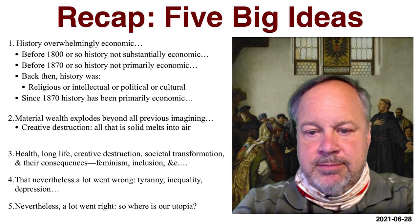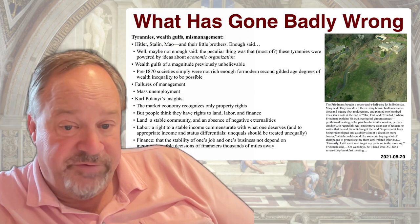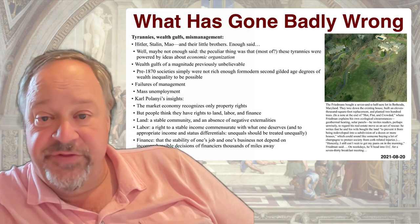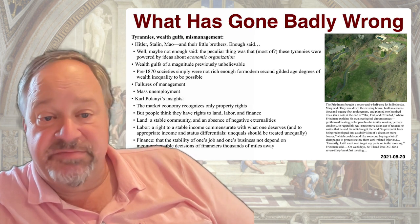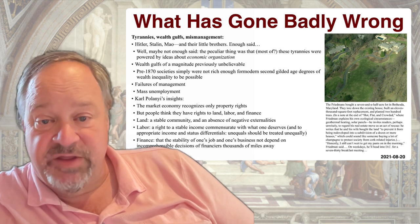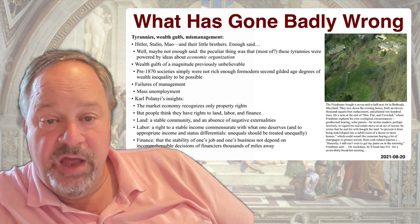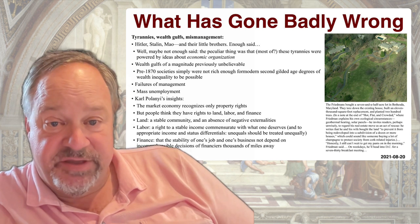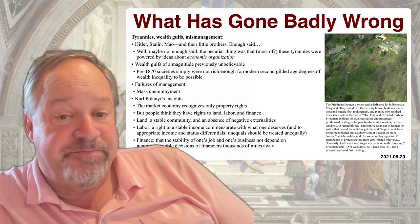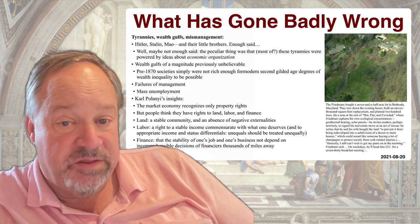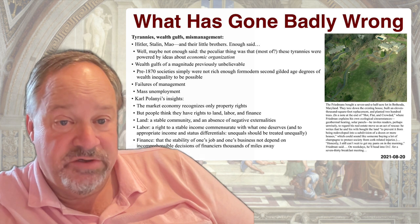Nevertheless, a lot went right. So, given that a lot went right and we are so much richer than our predecessors, where in fact is our utopia? Let me briefly underscore all the things that have gone badly wrong: tyrannies, wealth gulfs, and mismanagement — Hitler, Mao, and Stalin, and their little brothers. The peculiar thing was that most of these tyrannies were powered by ideas about what the proper economic organization of the world should be.